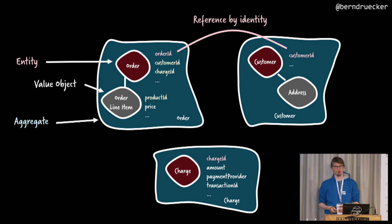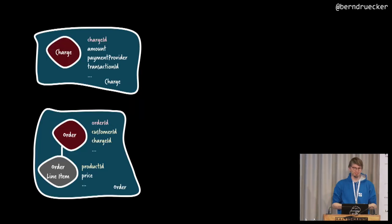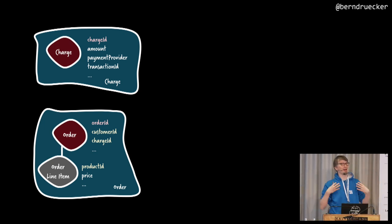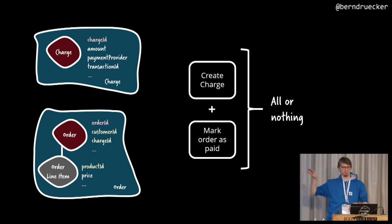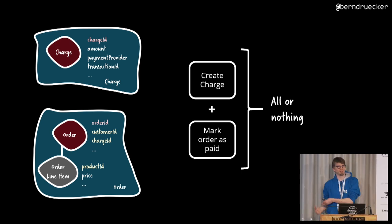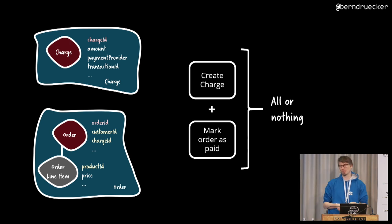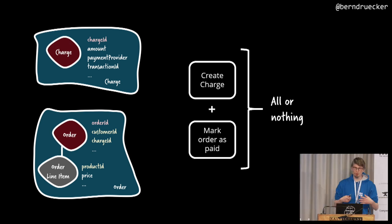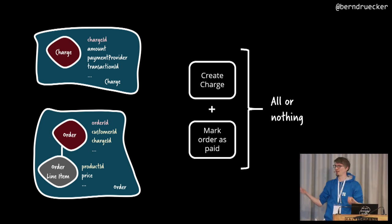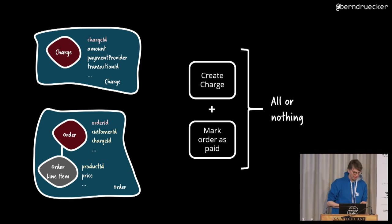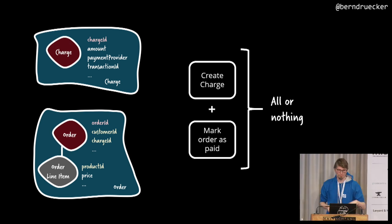We could have more of these kind of aggregates. You probably know examples where you have the requirement to do two things rooted in different aggregates — business logic — in an all-or-nothing semantics. That's actually what I want to talk about today. For example, I create the charge and I want to mark the order as paid as a flag.